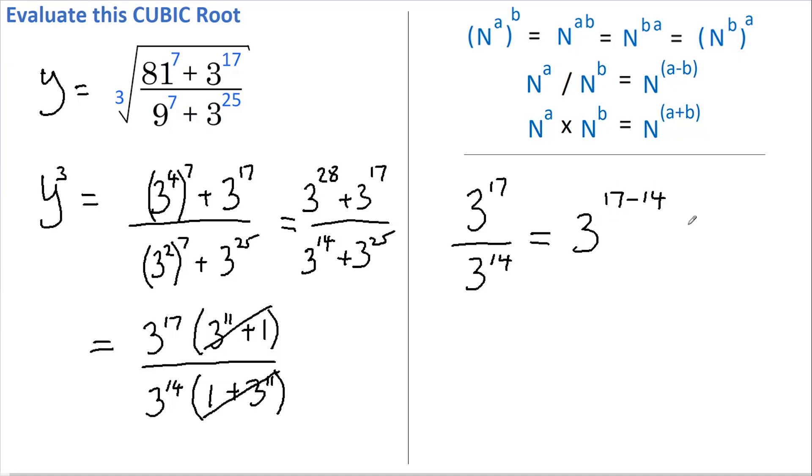Now remember, at the beginning I cubed both sides of the equation. Therefore, it's y cubed that equals 3 to the power of 3. Therefore, if I take the cube root of both sides, I get that y equals 3. And since y equals the term that we wanted to evaluate, 3 is the answer.